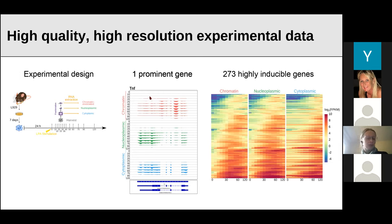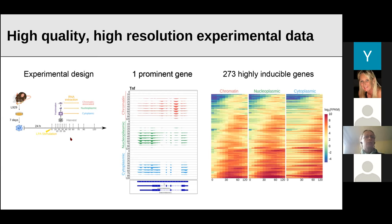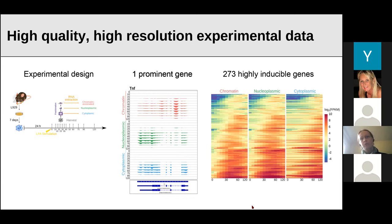During the ribonomics project, very high quality, high resolution experimental data was generated. The experimental design was to grow macrophages, stimulate them with LPS, and then extract RNA at a very fine time course — almost every five minutes at the beginning. For each time point, cells were fractionated into three compartments to get chromatin-associated RNA, nucleoplasmic RNA, and cytoplasmic RNA. For the TNF gene, we can see a lot of intronic reads in the chromatin fraction, far fewer in the nucleoplasmic fraction, and fully spliced in the cytoplasmic fraction — and we have that for over 200 strongly induced genes.